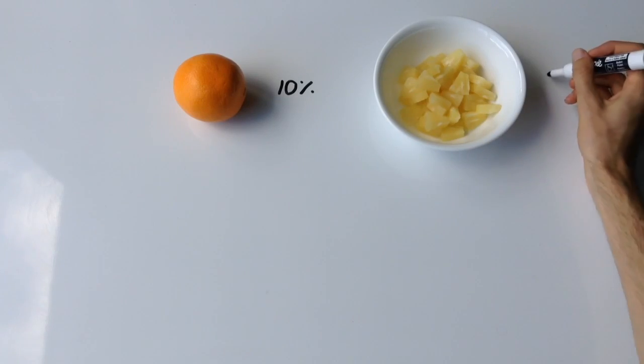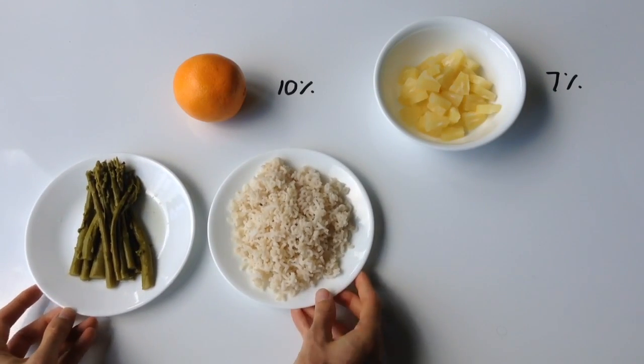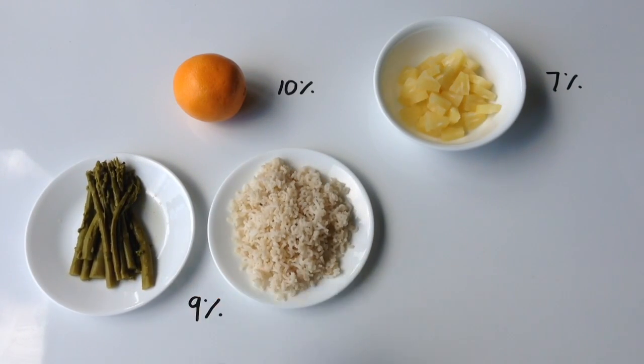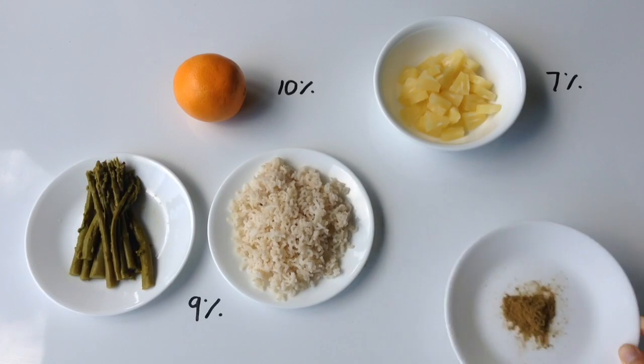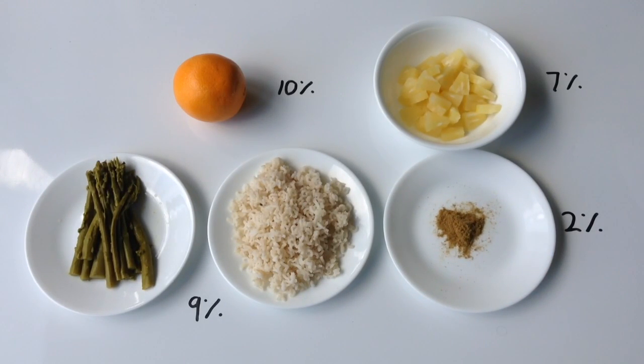To throw on some fruit, we have one medium-sized orange having about 10% and half a cup of pineapple having 7%, while a dozen asparagus stalks and a cup of brown rice have about 9%. Lastly, we have one teaspoon of ground up cumin having 2%.